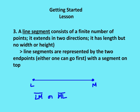A line segment consists of a finite number of points. It extends in two directions. It has length, but it doesn't have width or height. Now line segments are represented by the two endpoints. Either one can go first. They're going to be capitalized with a segment or a bar on top. So no arrows, just a bar. So in this case, I can write it as segment LM or segment ML. Either one is just fine.